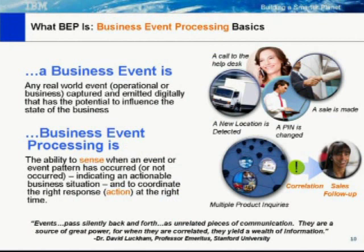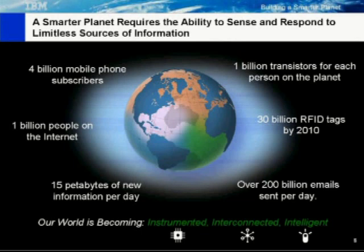Business event processing is about having the ability to sense when an event or an event pattern has occurred and to be able to take an action as a result of the business situation being identified. So an event is one occurrence. An event pattern is more interesting and more important — when we have multiple events occurring that may not seem related, if we can correlate them to identify a meaningful business situation, then we can actually initiate an action within the infrastructure.